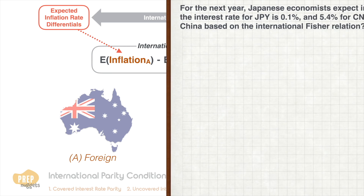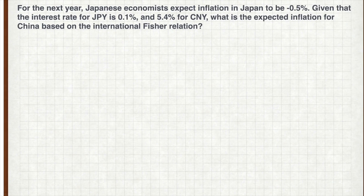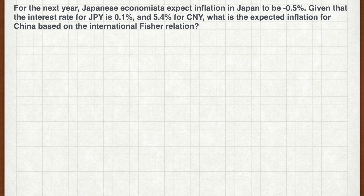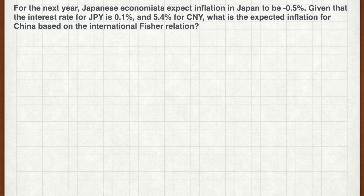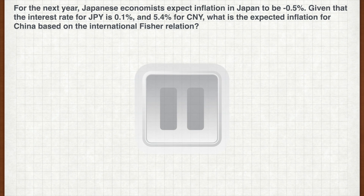Let's attempt one last exercise. For the next year, Japanese economists expect inflation in Japan to be minus 0.5%. Given that the interest rate for JPY is 0.1% and 5.4% for CNY, what is the expected inflation for China based on the international Fisher relation? Pause the video now and work out your answer.